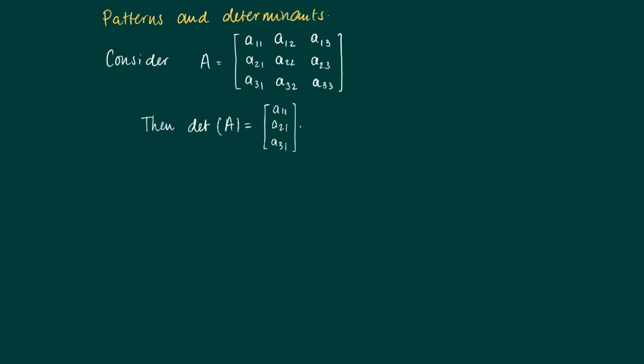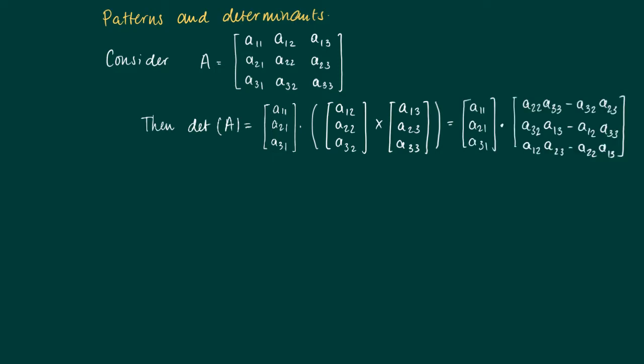The inner product with the outer product of the second and third column. So if you write this down, then we get the following. And we may even calculate it one step further. Then we see that this equals a sum of products of elements from the three columns.